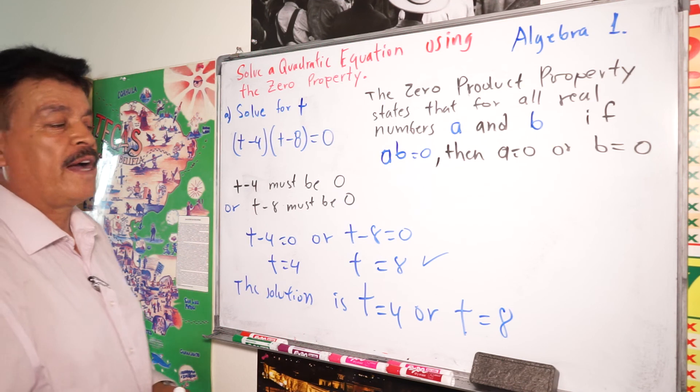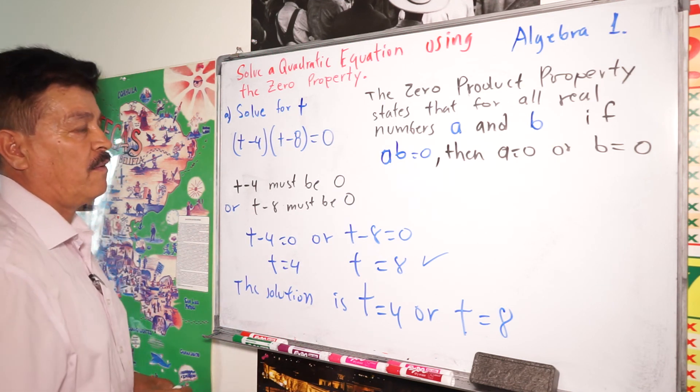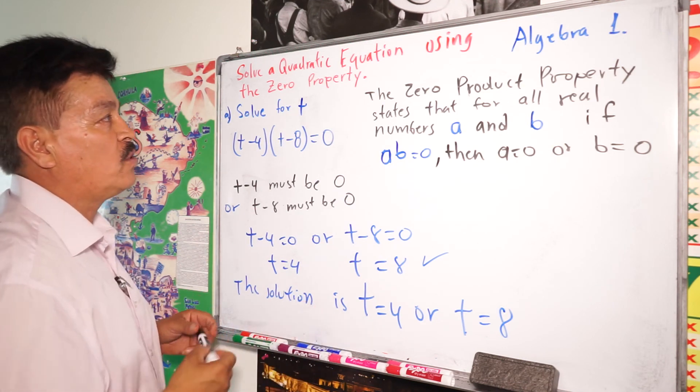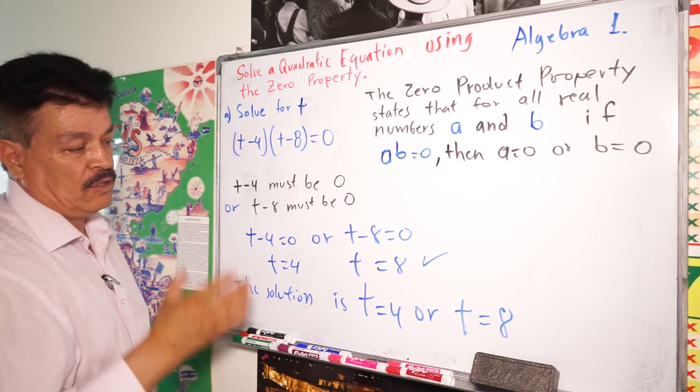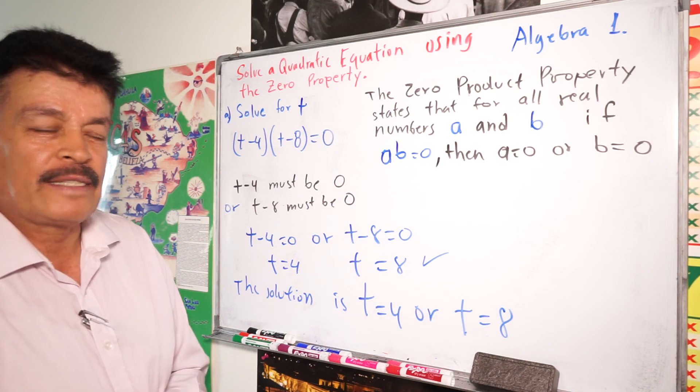So this is the way to find the answer of the quadratic equation using the zero product property. Very simple. So this class is for algebra. Thank you so much.